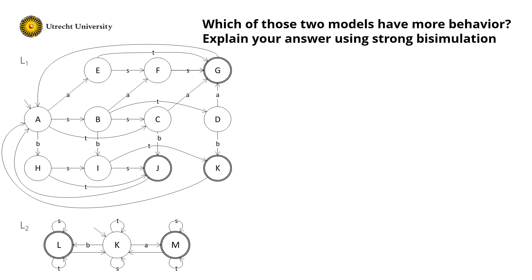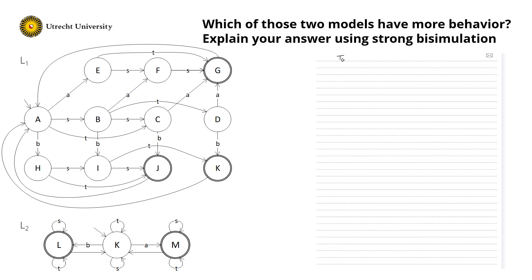Now let's dive into bisimulation. To show bisimulation, we need a relation. And we name the relation Q, that is from S1 to S2, such that L1 is strongly simulated by L2. And similarly that L2 is strongly simulated using Q by L1.